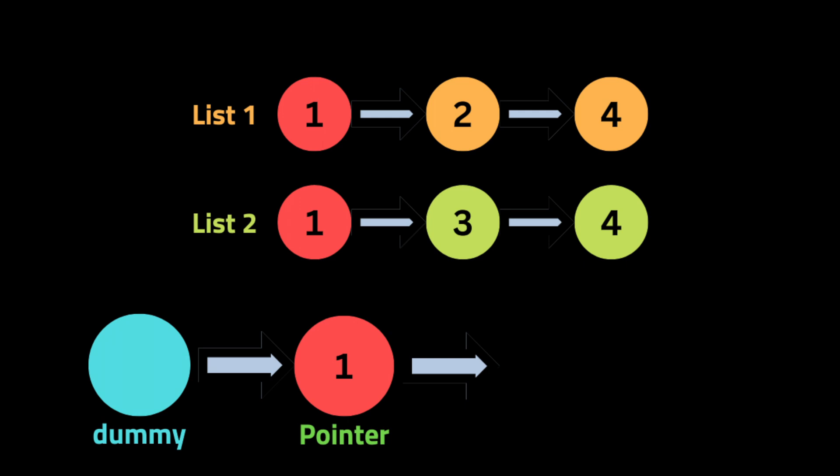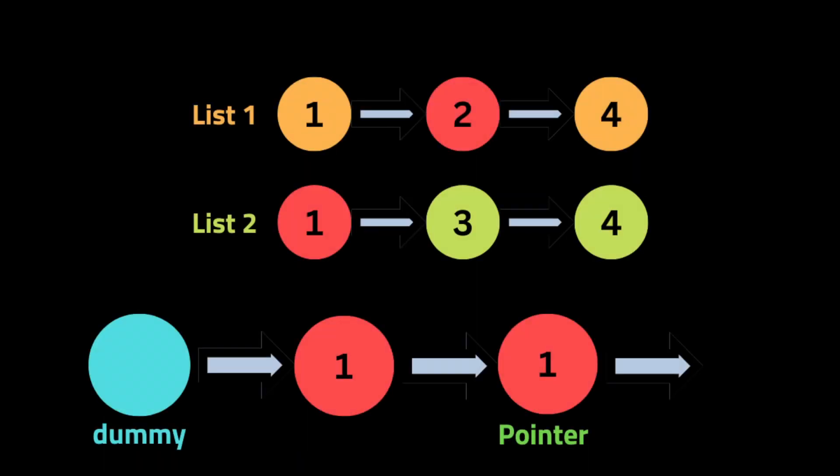For example, here we have the first node value of list one is one, and the first node value of list two is one. With the help of the pointer variable that's pointing to the head of the merged list, we add the first node to the merged list, move to the next node in list one, and then move the pointer variable to be the current node added to the merged list so we can add another value.